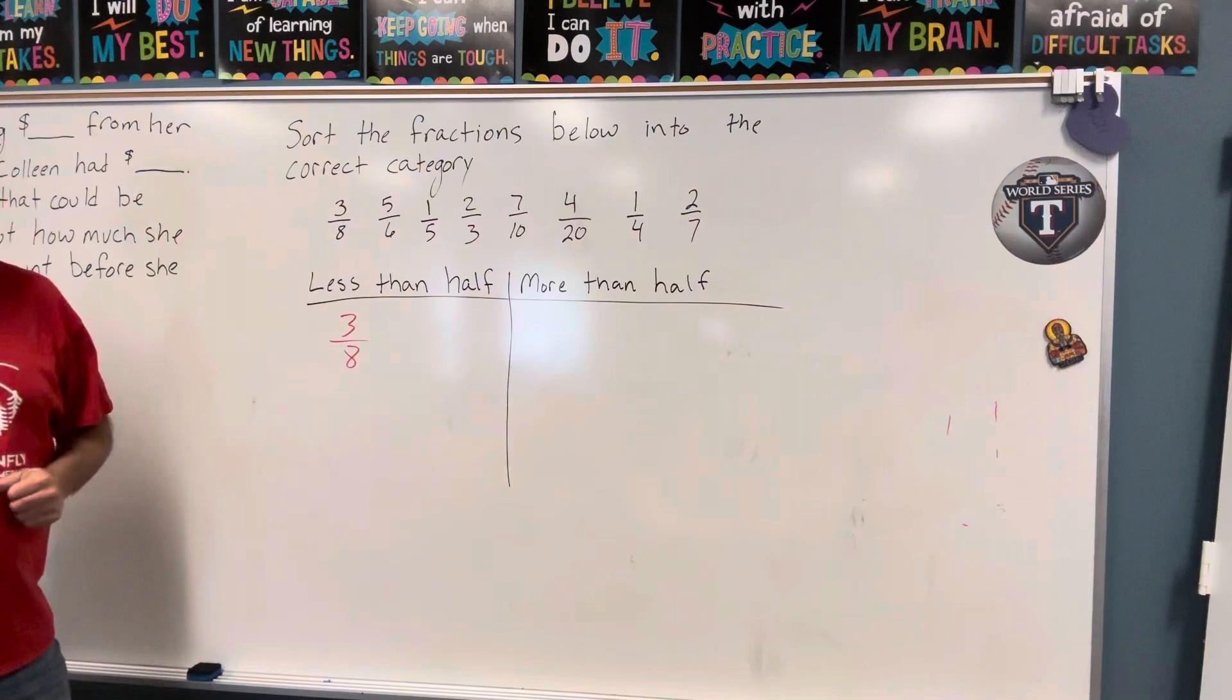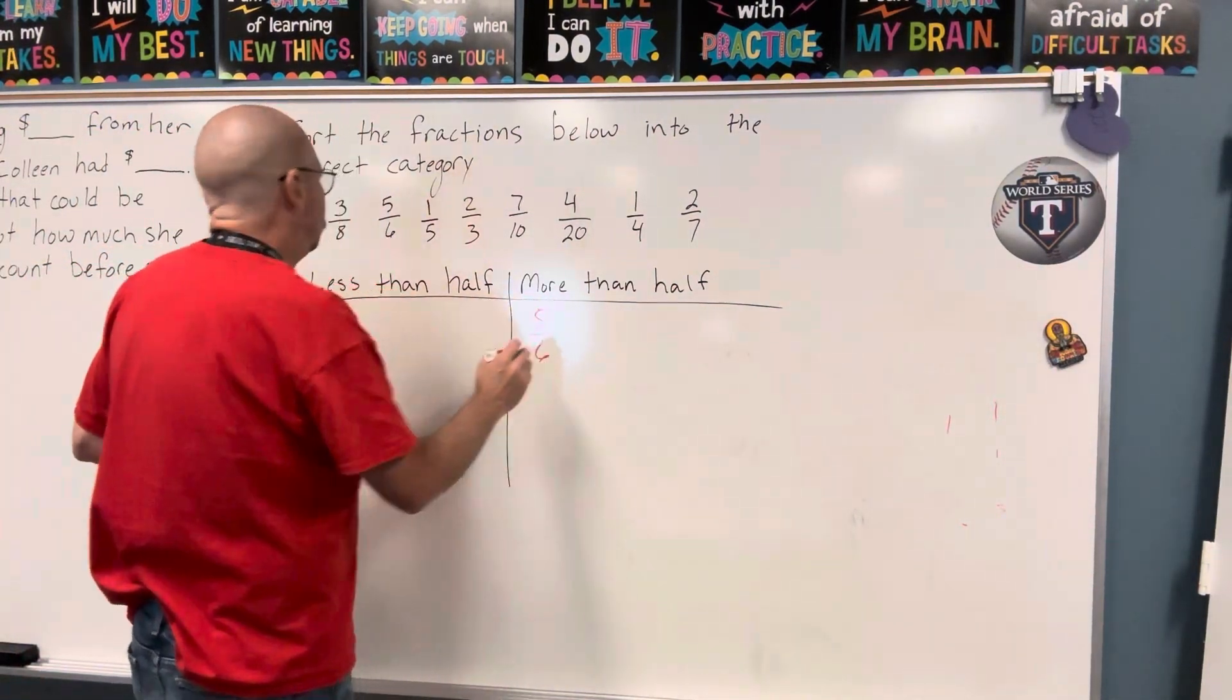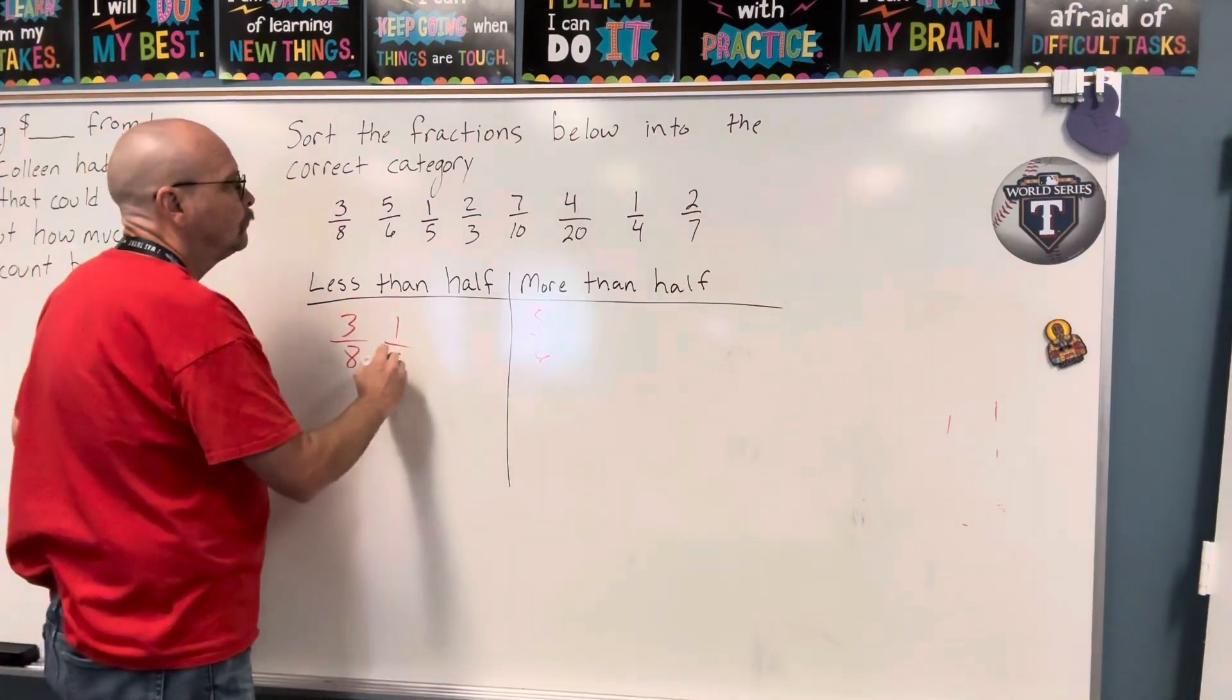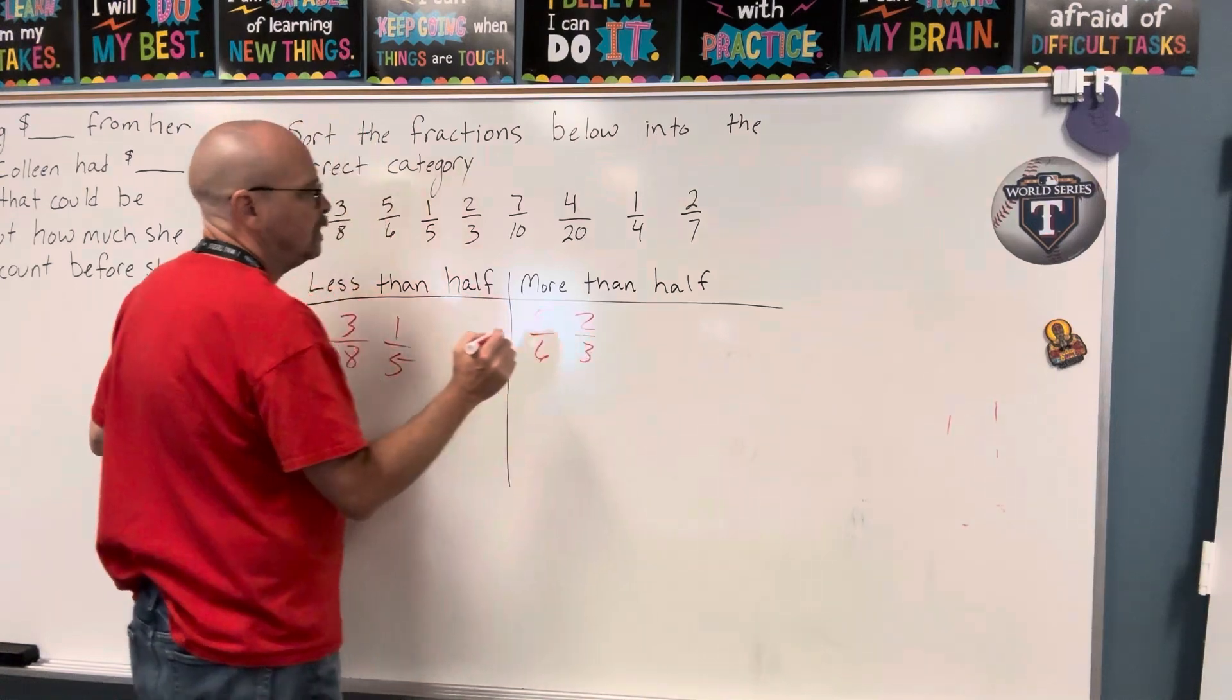Less than. Five sixths. More than. More than. One fifth. Less than. Less than. Two thirds. More than. More than. Seven tenths. More than. More than.